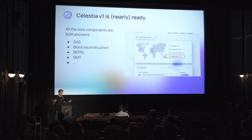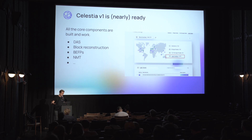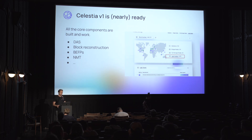Most of the work is done: we've built out data availability sampling, block reconstruction, bad encoding fraud proofs which I'll share more about later, a namespace Merkle tree which enables people to query data according to specific applications. We've tested this on the Block Space Race with over a thousand light nodes.